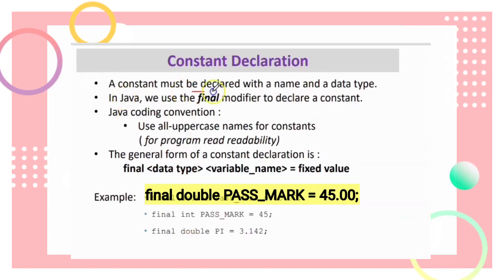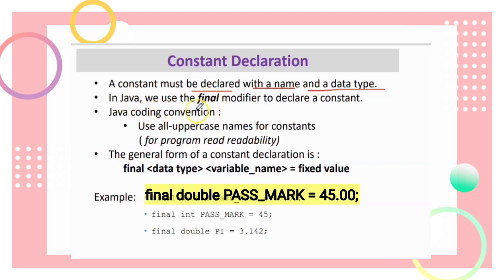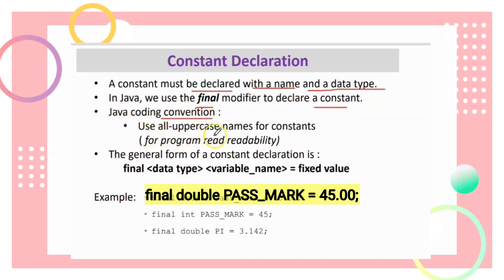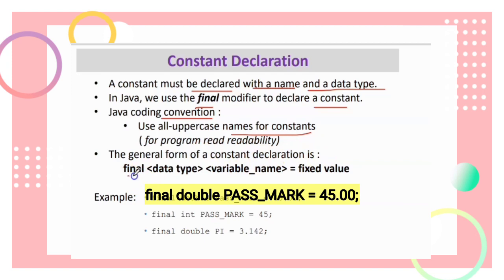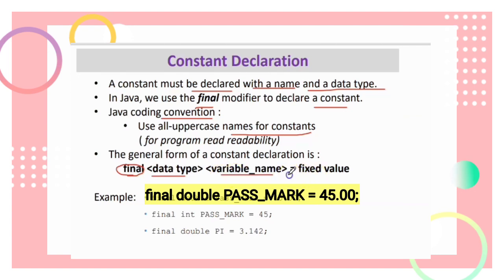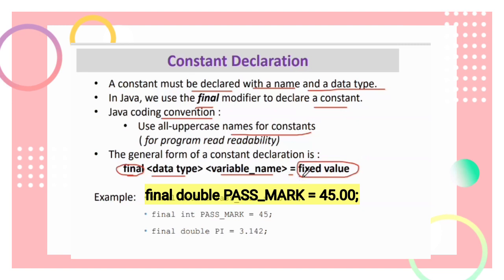A constant must be declared with a name and a data type. In Java, we use the keyword 'final' to declare a constant. By Java coding convention, you use all uppercase names for constants, because it improves program readability. The general form of a constant declaration is: 'final' followed by data type, variable name, equals sign, and the fixed value.